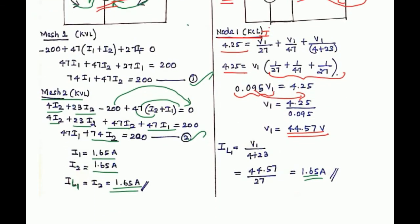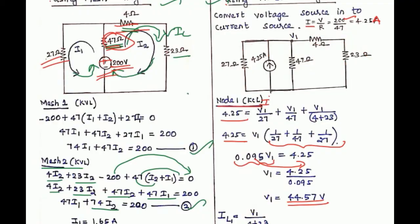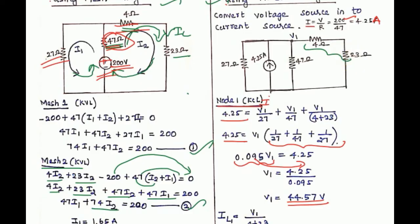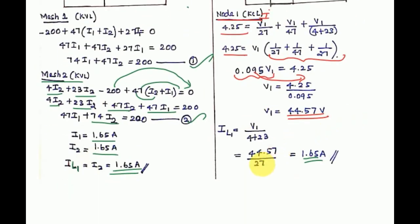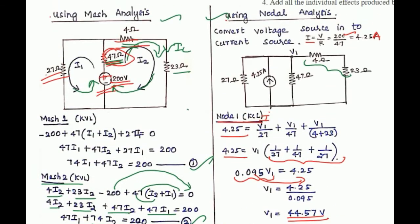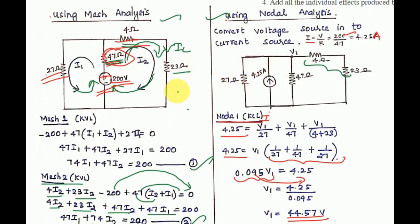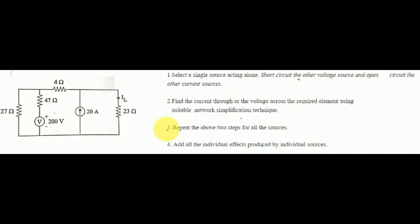The current through the 4 Ohm and 23 Ohm series branch is V1/(4+23). So the node equation becomes: 4.25 = V1/27 + V1/47 + V1/27. We will consider one source, then the other source, and combine the values — that is the superposition approach.